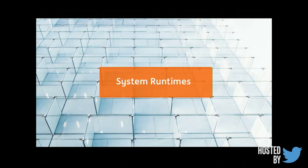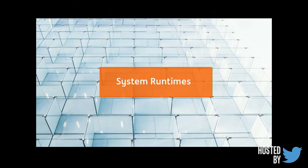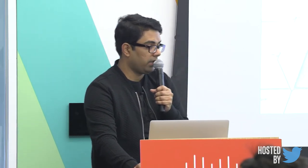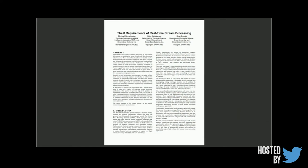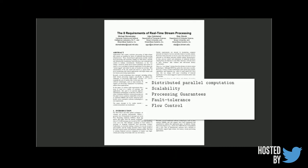In the next part of the presentation, we look at the runtime of these abstractions. We define a streaming program with some kind of abstraction, but it needs to be executed in a runtime. We'll look at the execution model and some interesting properties, focusing on processing guarantees, fault tolerance, and flow control.